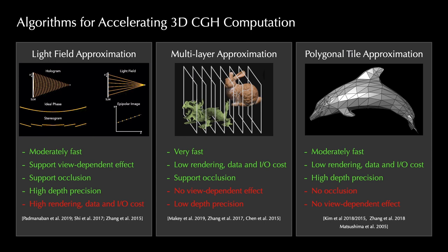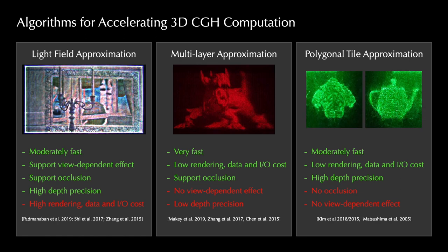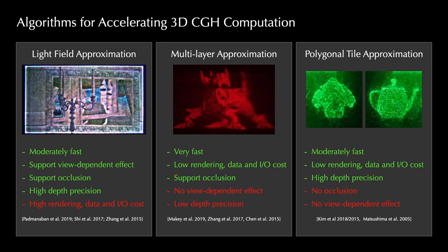Recent approaches to solve these challenges include using light fields as ray-based approximations, using multilayer images to reduce depth resolution, and using low-polygon meshes to replace dense point clouds. However, these approaches explicitly trade image quality with computational speed, and the demonstrated results do not provide a compelling 3D experience.